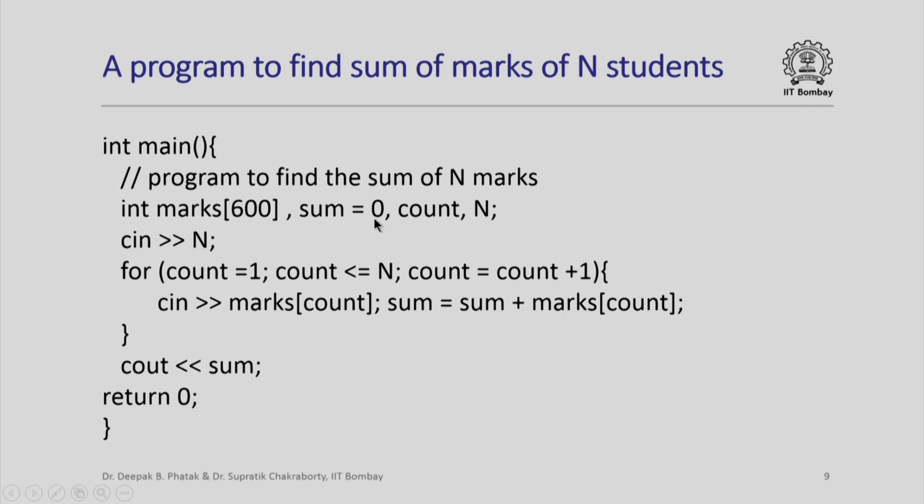We initialize sum to 0, we use the same count variable and n as the maximum number of students whose marks are going to be input. So we read the input value for n. As last time, we set up an iteration. This iteration will work using the for statement with count equal to 1 all the way up to count less than or equal to n.